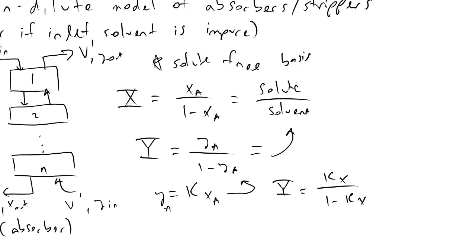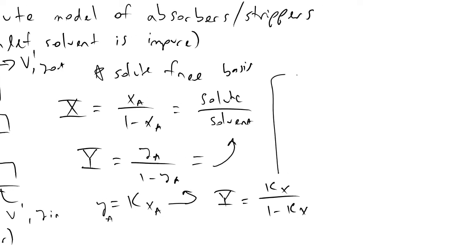And if we now plot this value, what we'll find is that our plot of capital Y versus capital X now resembles some kind of curve. And so we'll have multiple values across this equilibrium curve. And this is for a non-dilute system.